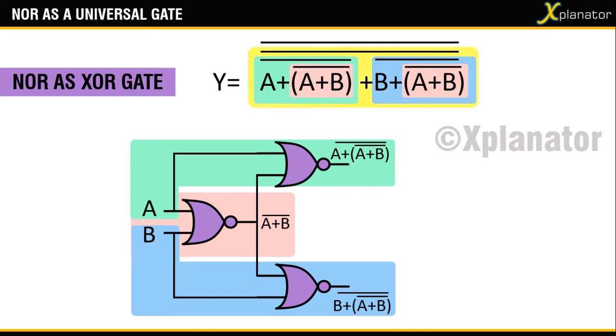For drawing the part of the equation shaded in yellow, you will need the previous outputs as inputs to another NOR gate. So take complement of A plus A plus B the whole bar as input 1, and complement of B plus A plus B the whole bar as input 2.